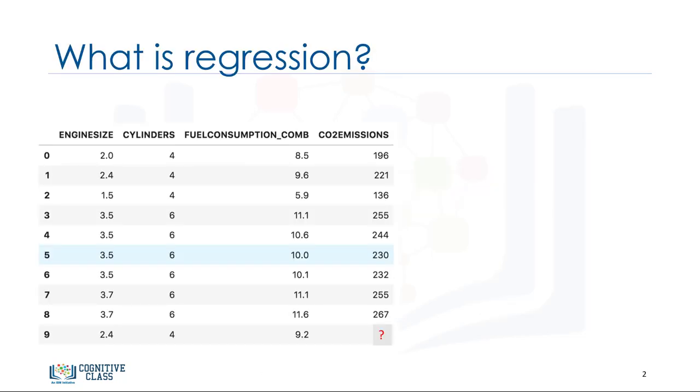Look at this data set. It's related to CO2 emissions from different cars. It includes engine size, number of cylinders, fuel consumption, and CO2 emission from various automobile models.